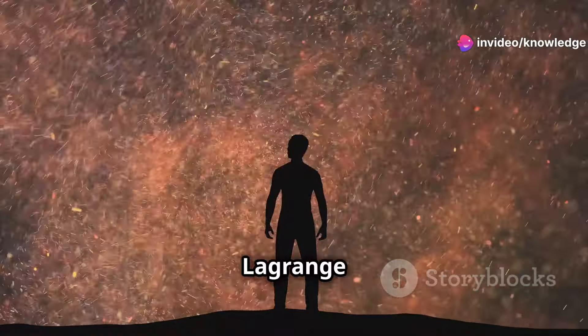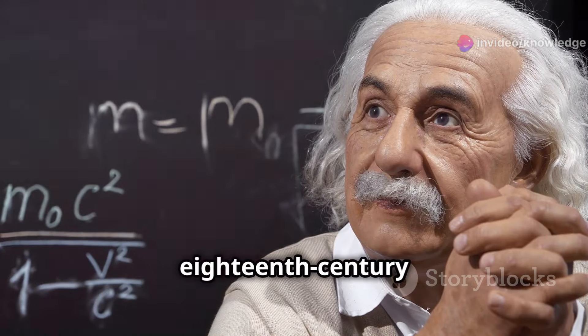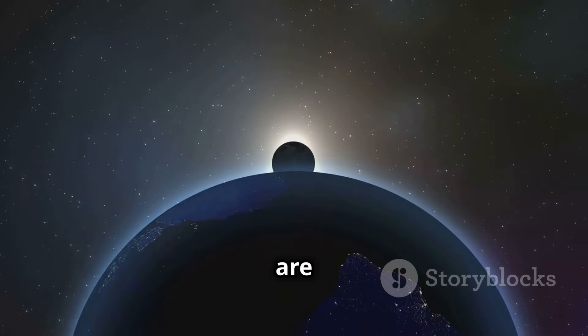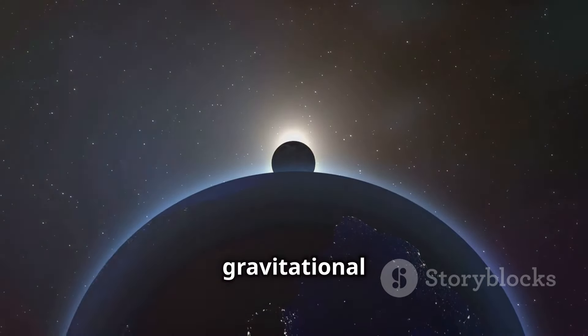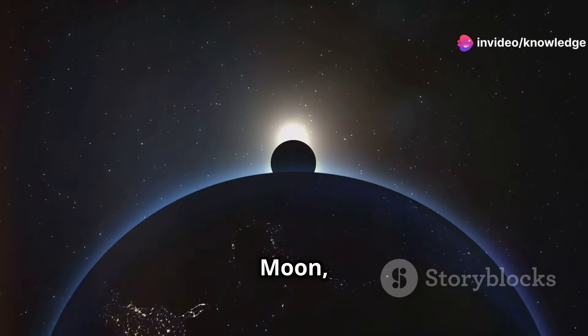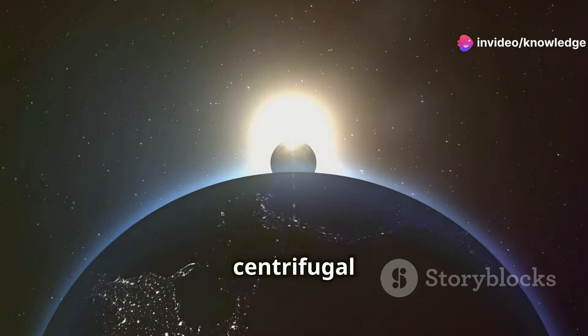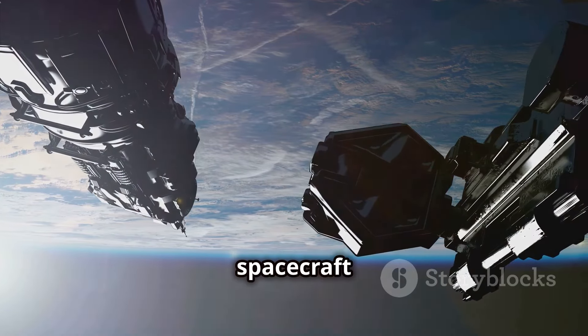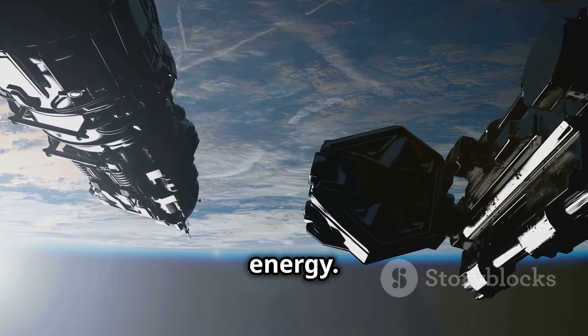So what exactly are Lagrange points? Named after the 18th century mathematician Joseph Louis Lagrange, these points are positions in space where the gravitational forces of two large bodies, like the Earth and the Moon, balance with the centrifugal force felt by a smaller object. This balance creates a stable location where spacecraft can park without using much energy.